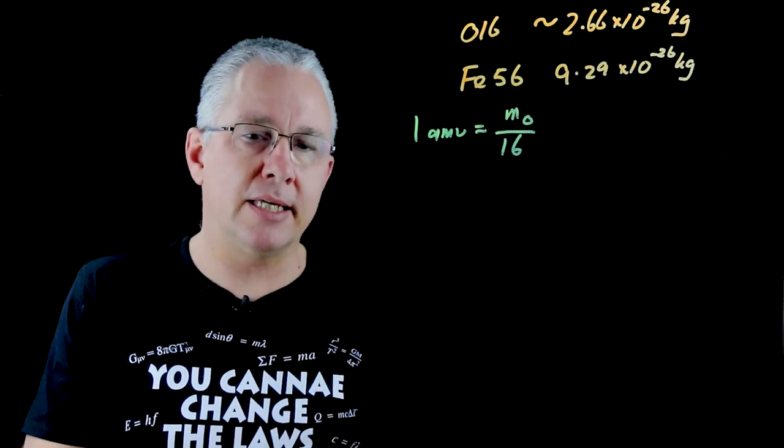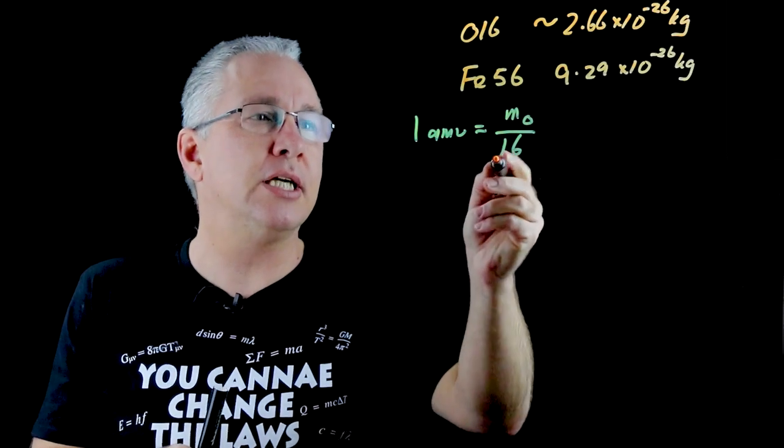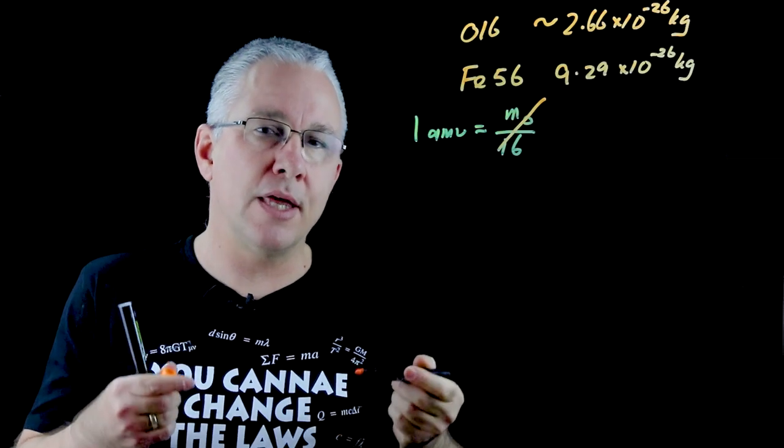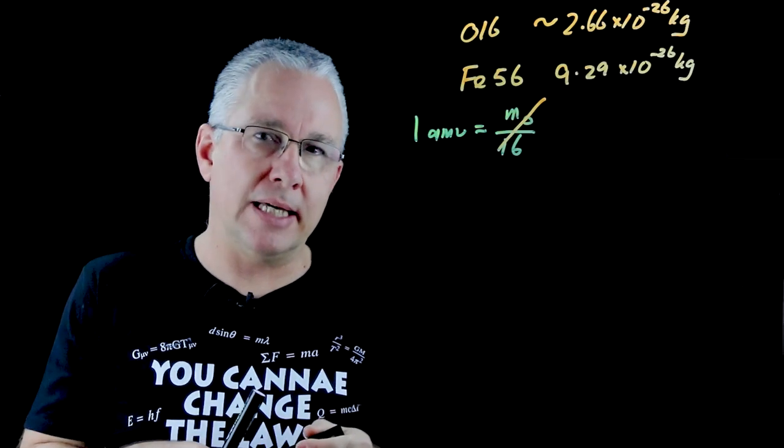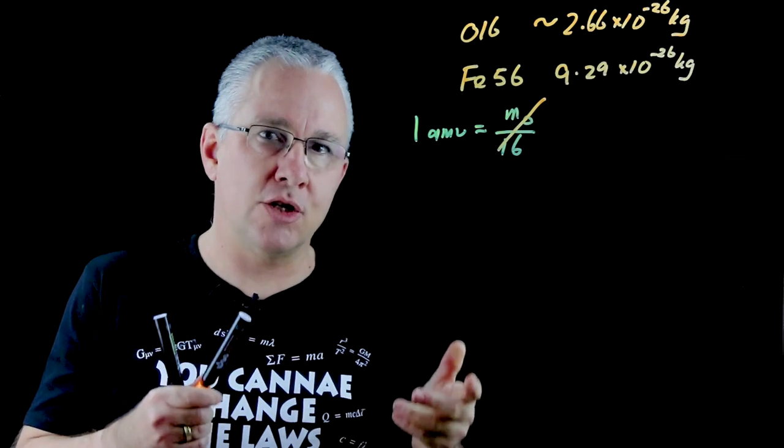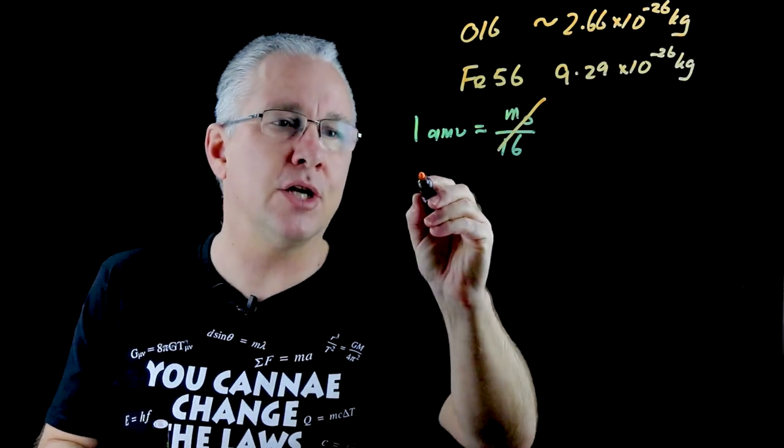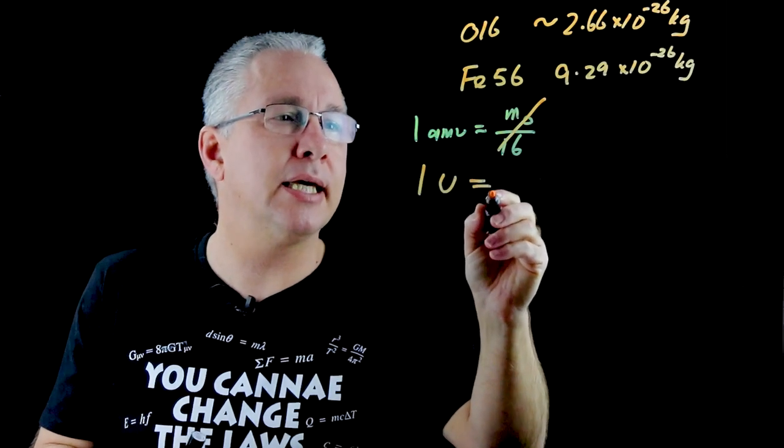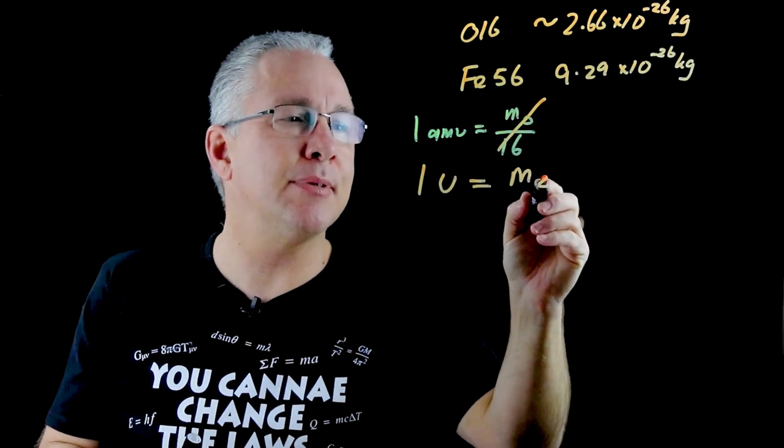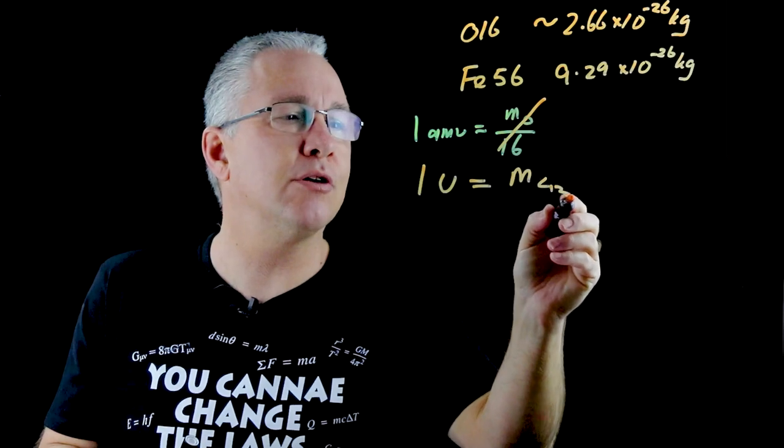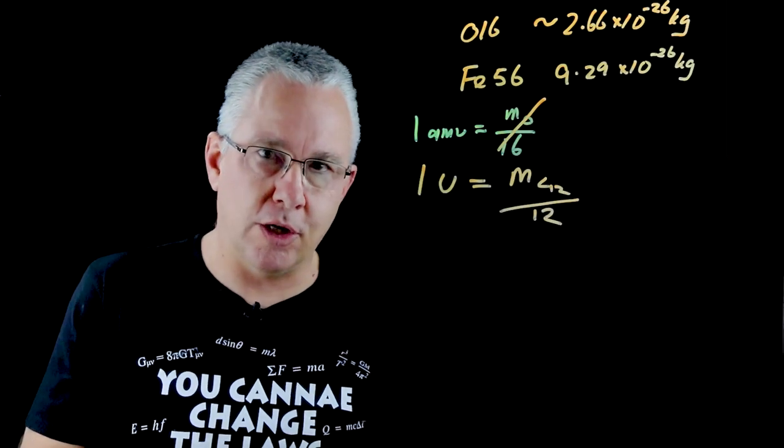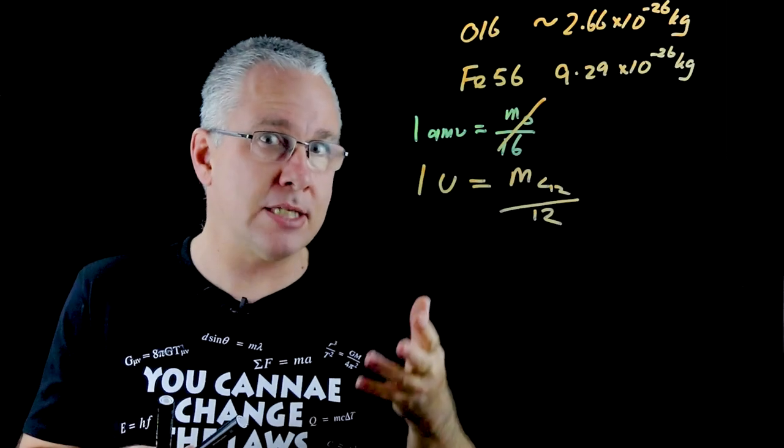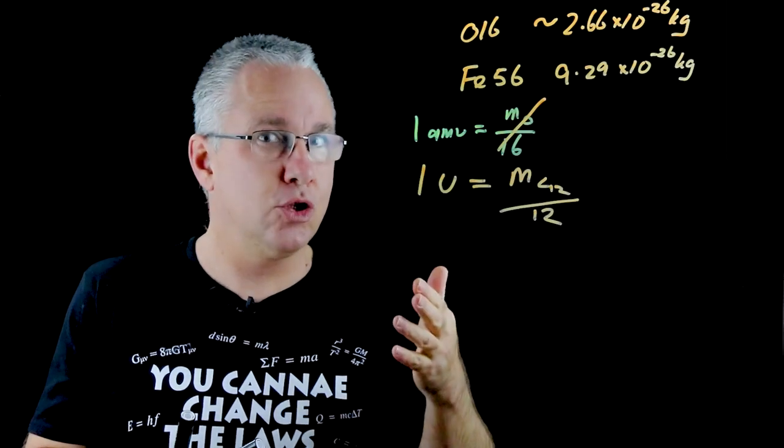So it was decided that instead of using oxygen here as our basis, it was decided that we would use the carbon atom. And now what we get is what we call the unified atomic mass unit. And as a result it becomes 1u becomes basically the mass of my carbon and specifically carbon 12. And we divide this by the number of nucleons and as a result that becomes 1u. So in other words the mass of carbon is now actually called 12u.